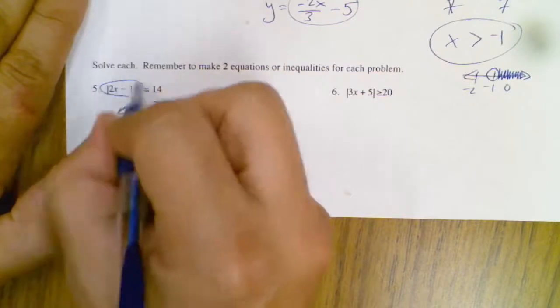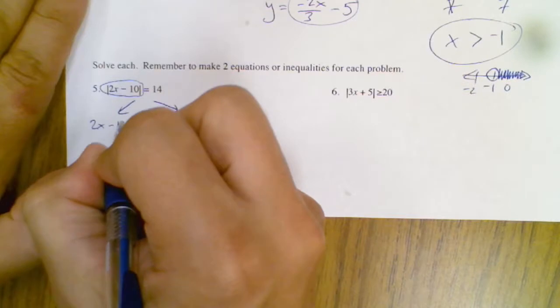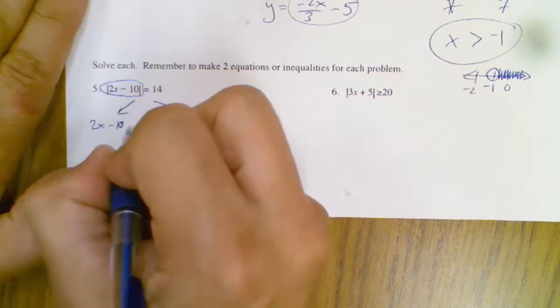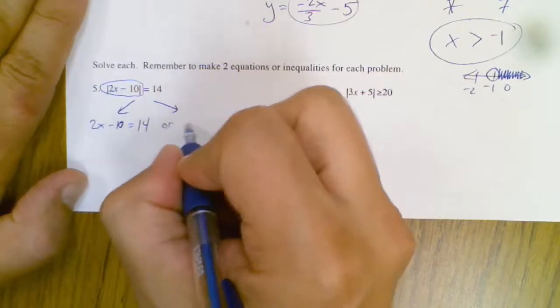And when that happens, you just copy it down, don't change what's inside, and one of them equals the regular 14, or it equals the negative 14.